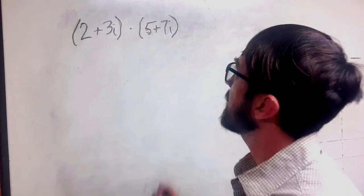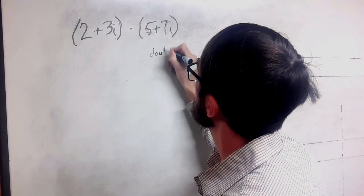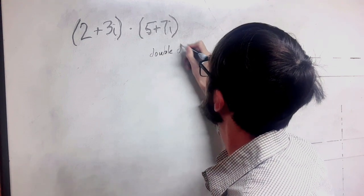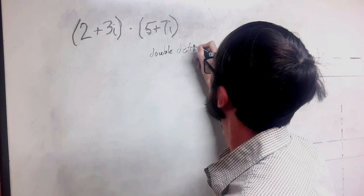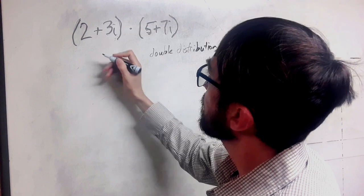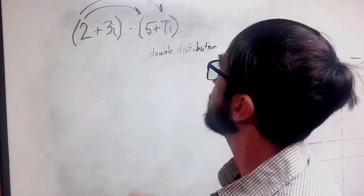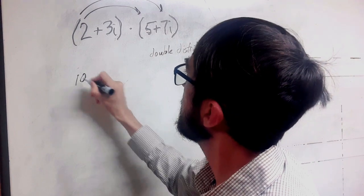Next, we're going to multiply. And for this, we're going to use the double distribution. So first, we want to multiply the 2 across each of these. 2 times 5 is 10.